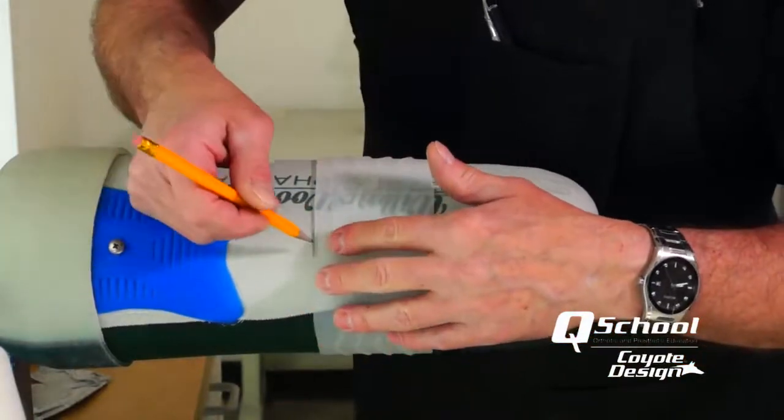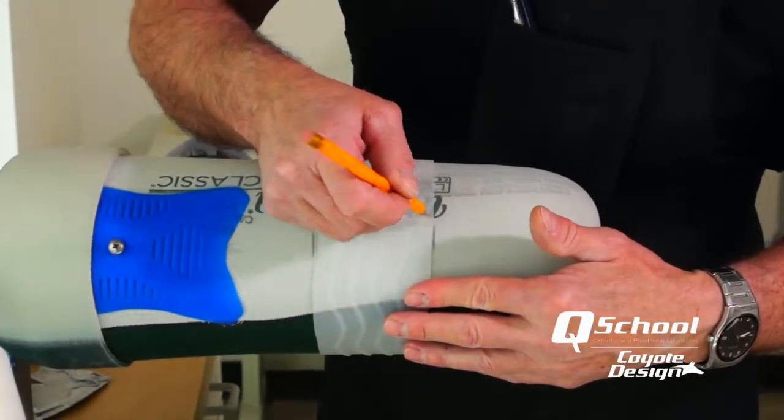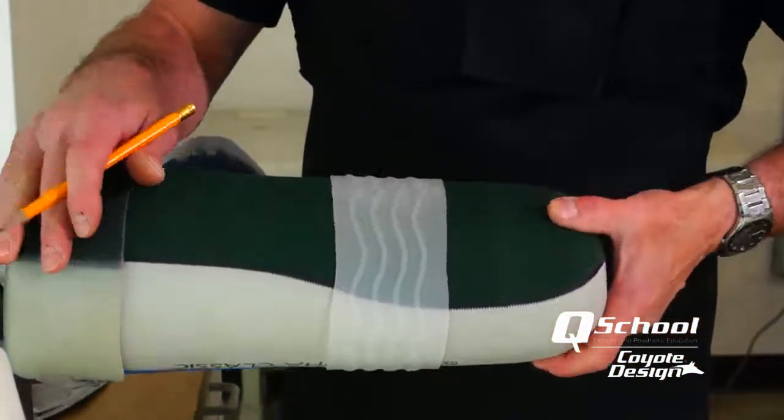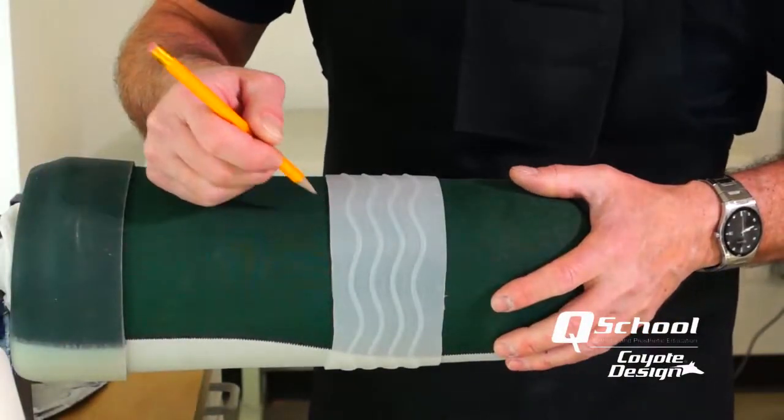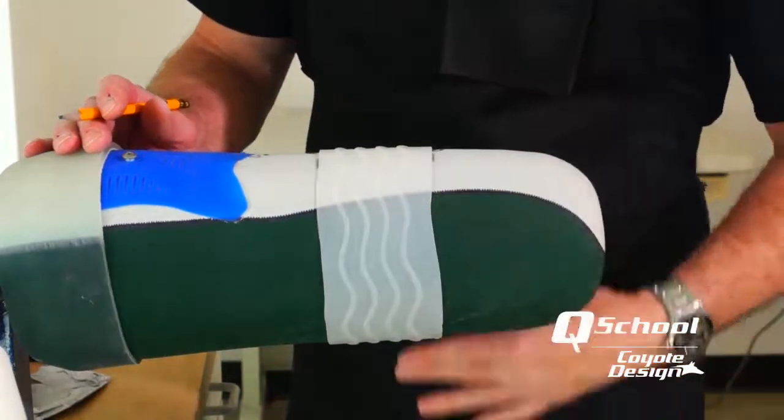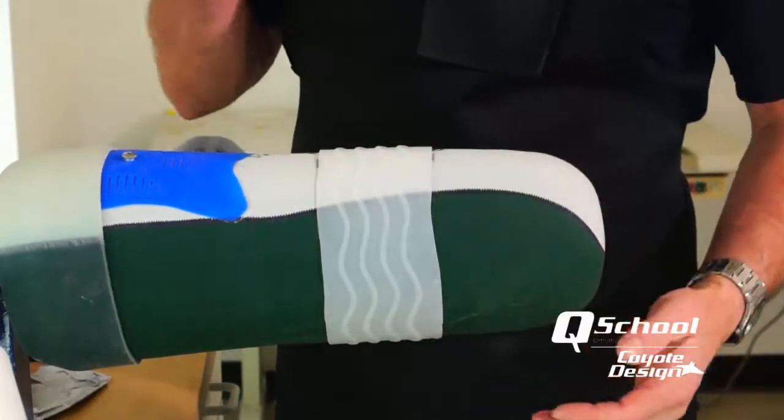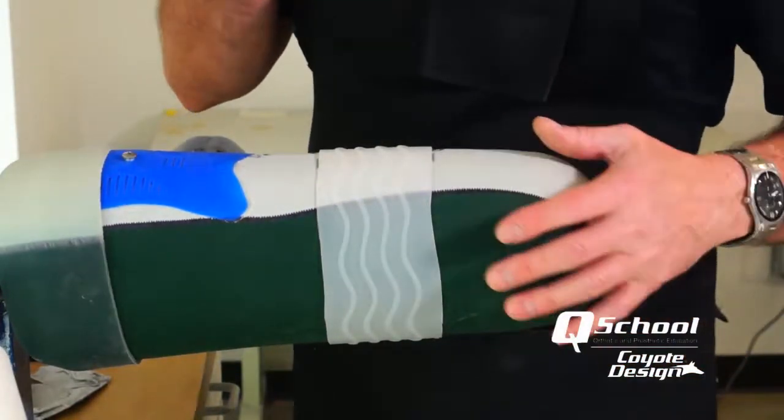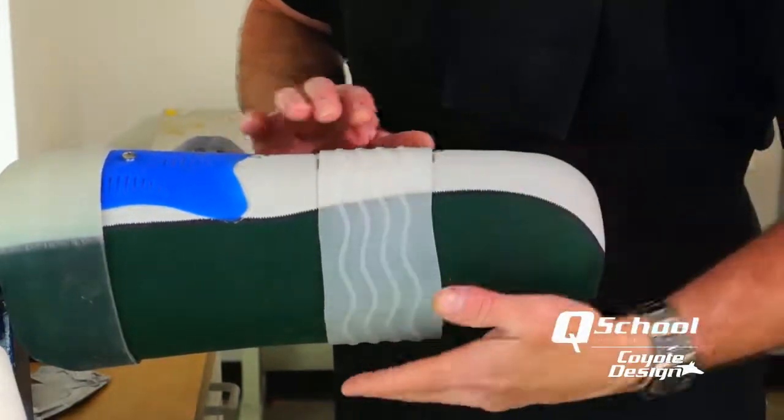So we've tried it on our patient and we like where it's at. What we've done when it was on the patient was made a couple of marks, a couple of little tick marks with our pencil on our liner just like that. And then I went around here on the back and I made a couple of marks. They're hard to see on the screen, but this band is fairly straight running all the way around my liner.